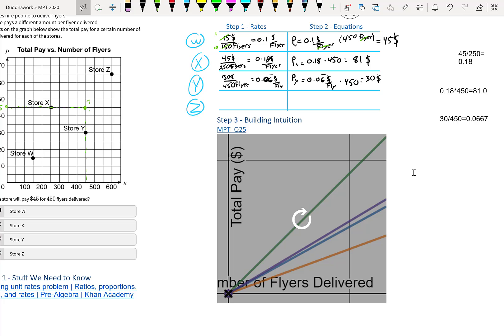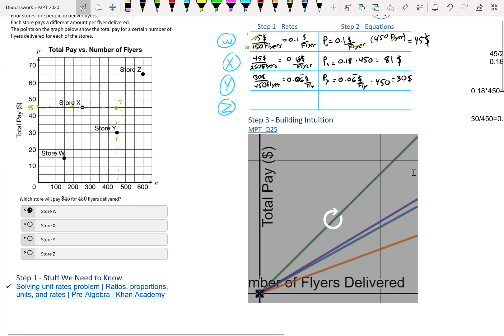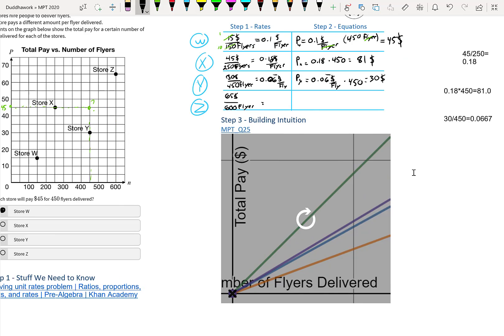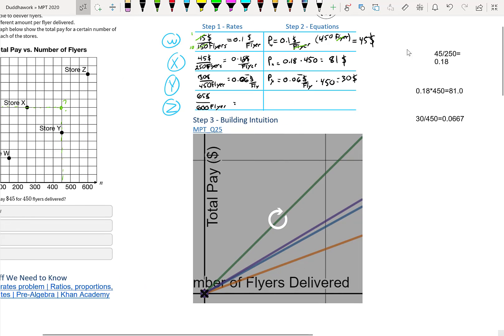And finally, for store Y, you get paid $65. Store Z, sorry. For 600 flyers. So then when we do the math, I'll just erase all of that. So then that would be $65 divided by 600. And that's $0.10 and like $0.83. So that's $0.1083 per flyer. So it's a little bit better than the store W, but it's worse than, quite worse than store X.